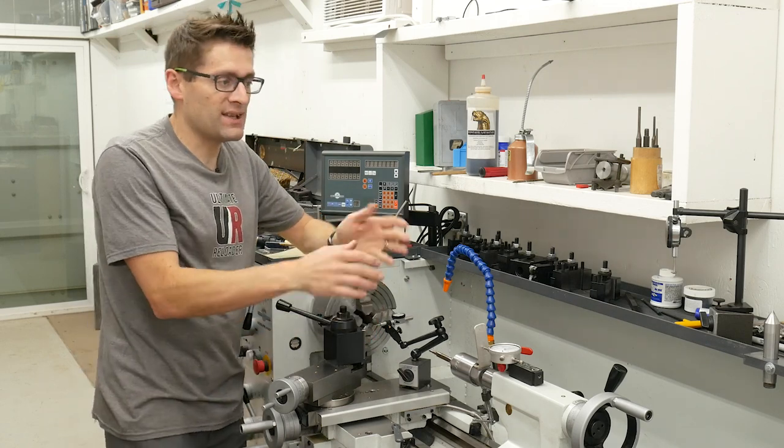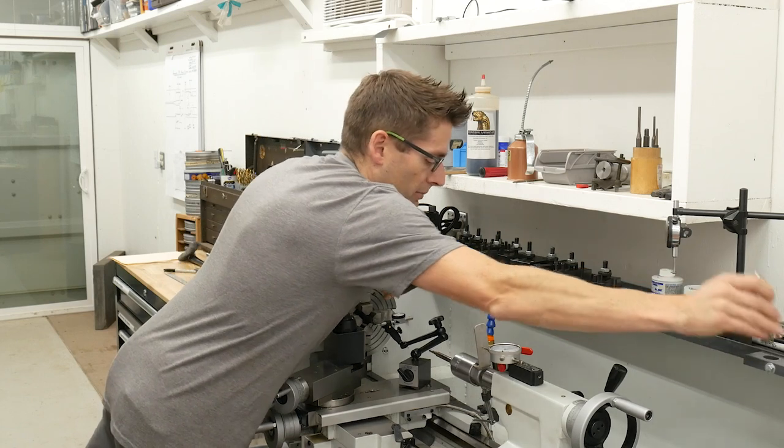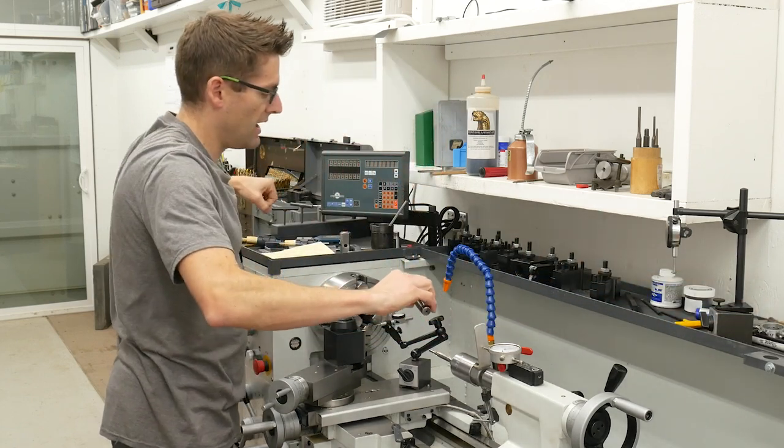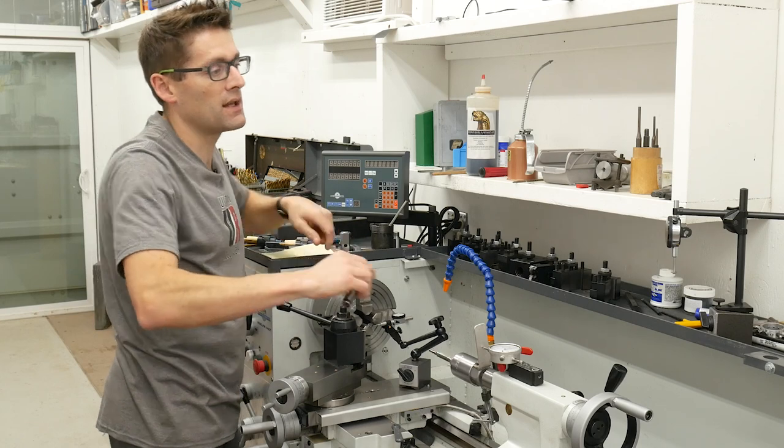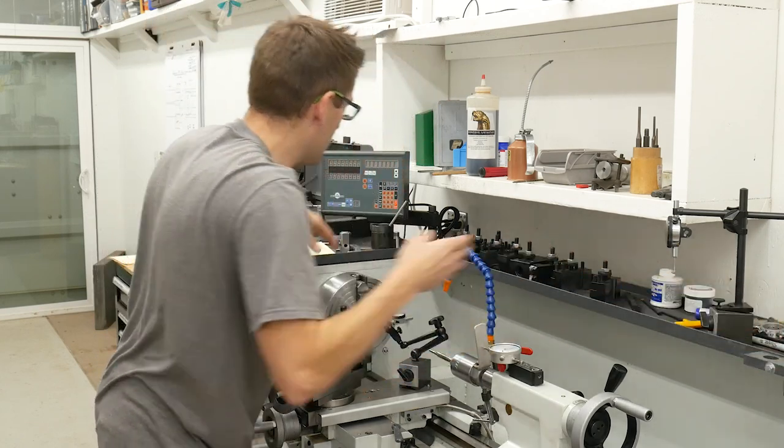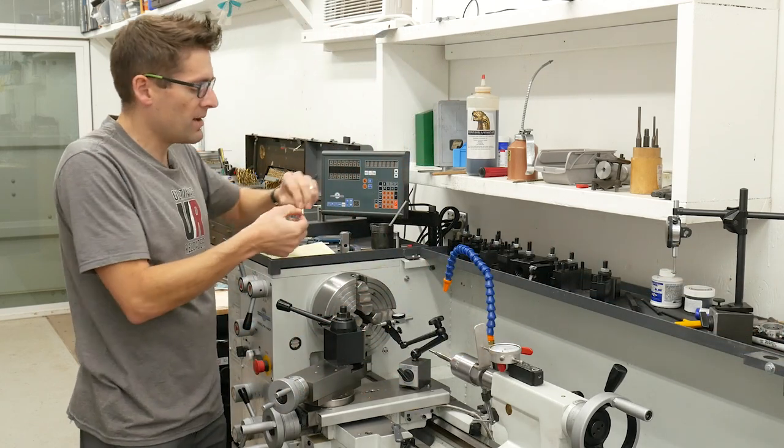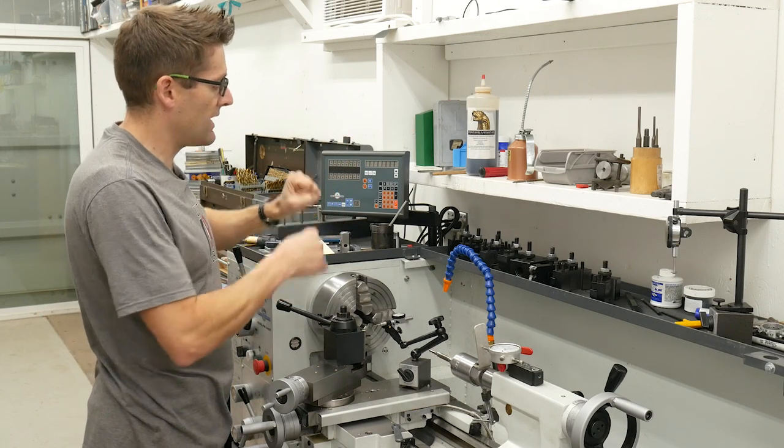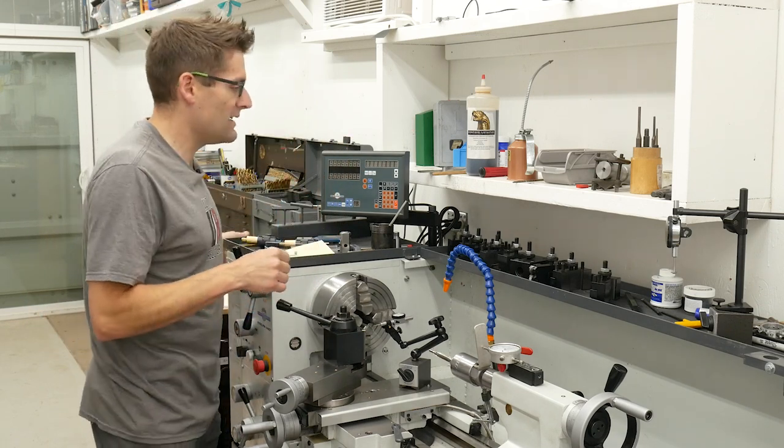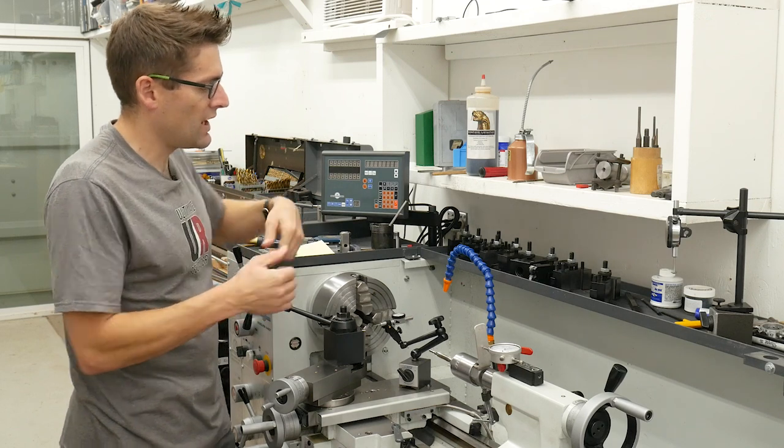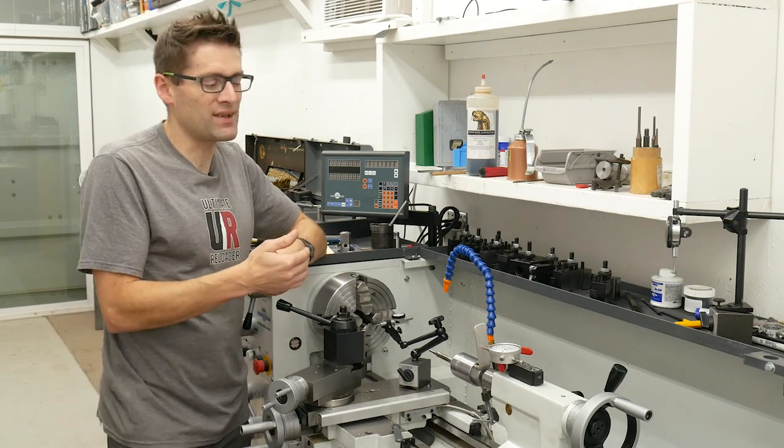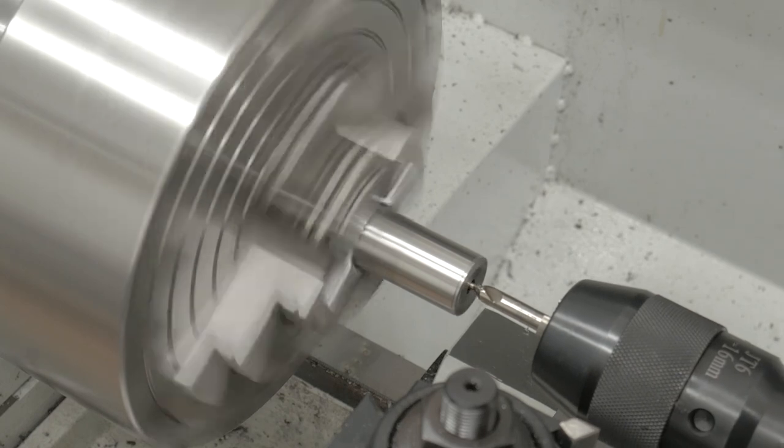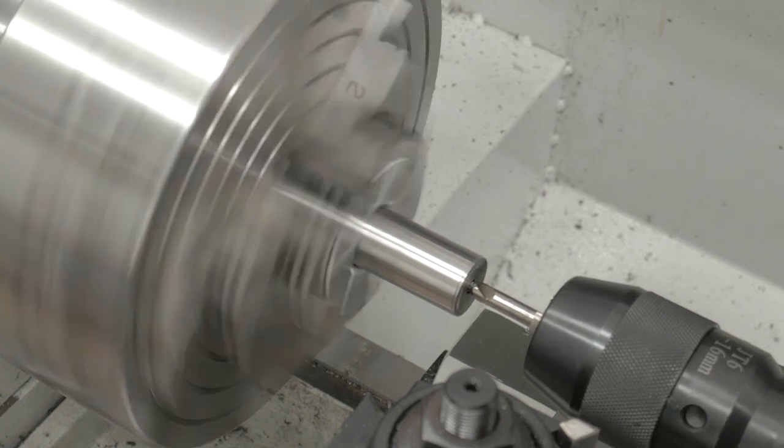I took a dead center and put it in the tailstock, then held the muzzle bore exit up to the dead center to center it while I brought the chuck jaws in with pivoting protection pads. I took a couple facing passes and used a center drill to deburr the bore exit.